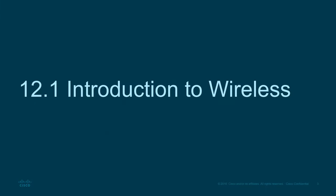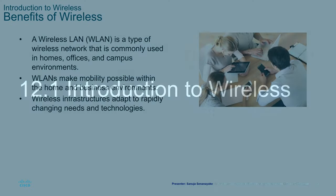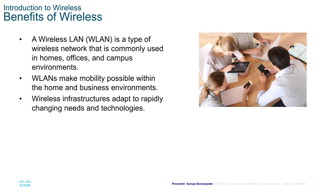Introduction to Wireless. A wireless LAN, also known as WLAN, is a type of wireless network that is commonly used in homes, offices and campus environments. WLANs make mobility possible within the home and business environments because you don't have any cables connected to your device.